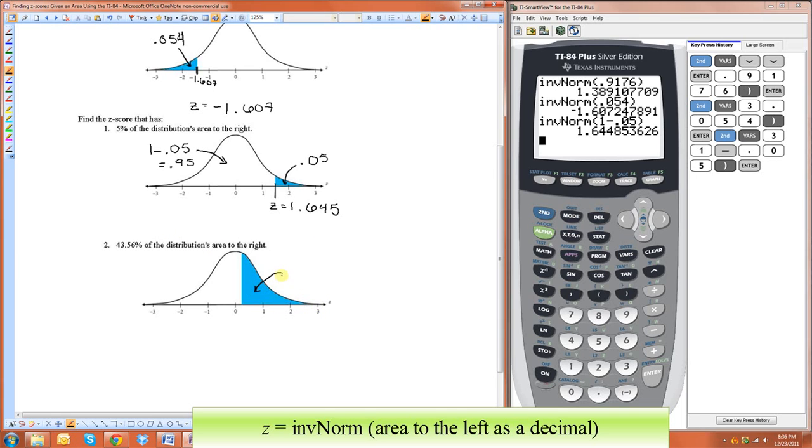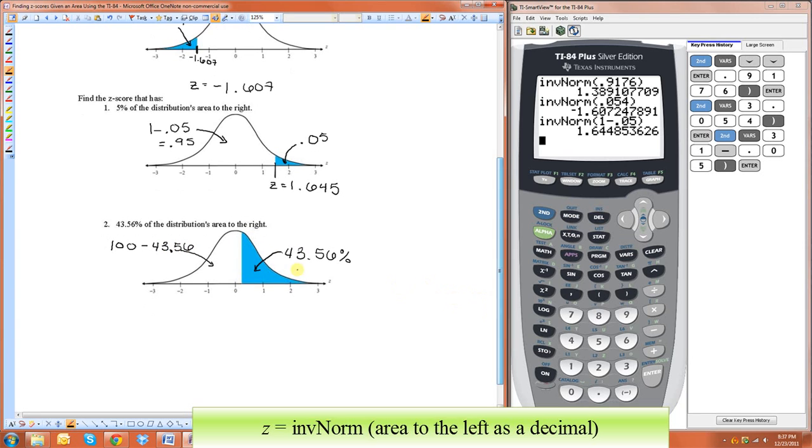So this one says 43.56% is here. So this area is just 100% minus 43.56. Now, make sure you convert these to decimals first. And we could just do this in the calculator as well if you don't feel like finding what that actually is.